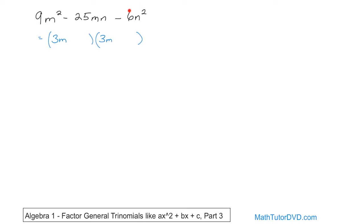And then you look and say, well, I have 6. What times what gives me 6? The first thing I think of is 2 times 3 is 6. So this will be 2n times 3n. The reason there's an n is because you have n squared there. Just look at the interior terms. This is going to give me 6. 2 times 3 is 6. This is going to give me 9.